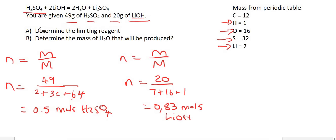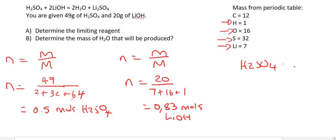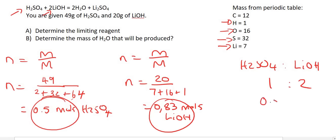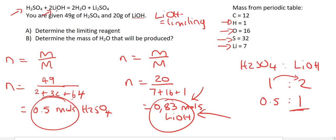Now we identify the limiting reagent. Writing H₂SO₄ to LiOH with a balanced equation ratio of 1 to 2: using 0.5 moles of H₂SO₄ and multiplying by 2, we'd need 1 mole of LiOH. We only have 0.83 moles — not enough. So lithium hydroxide is the limiting reagent. For the rest of the question, use the limiting one.